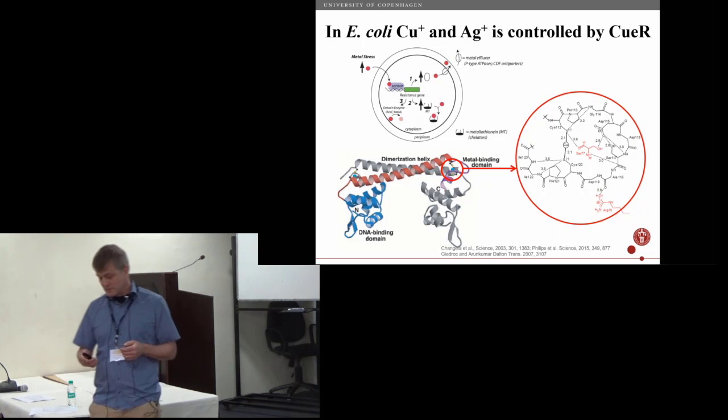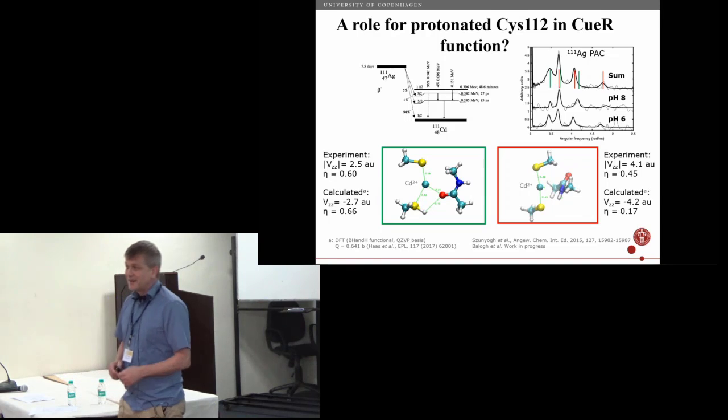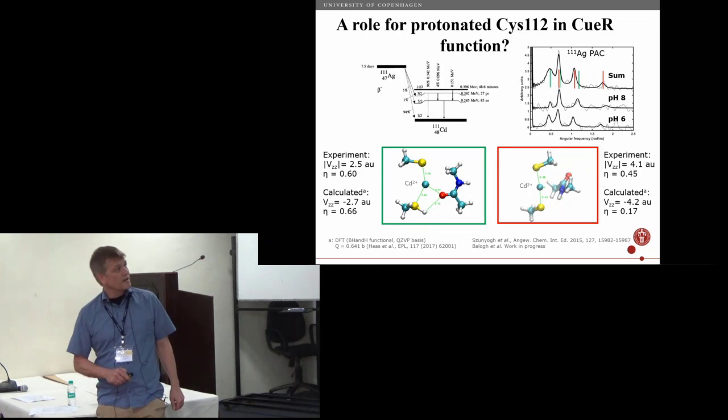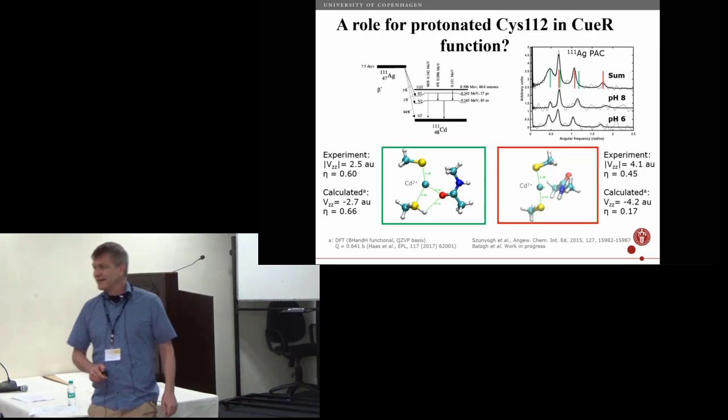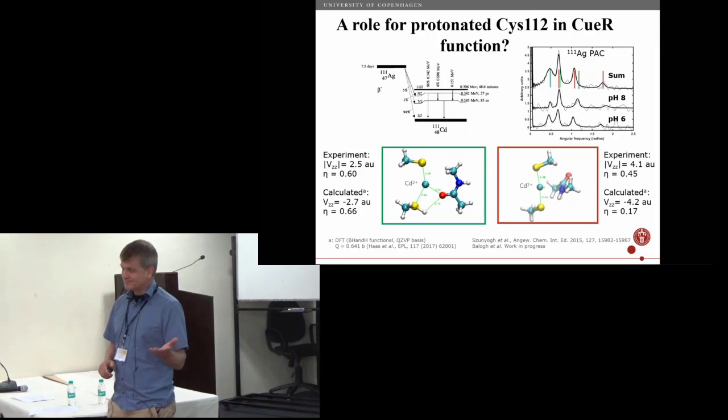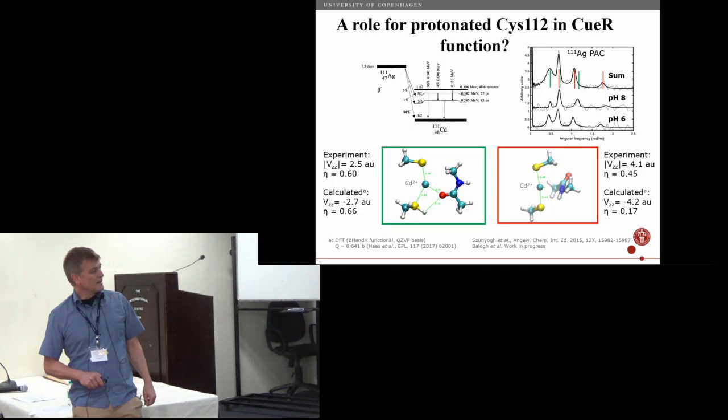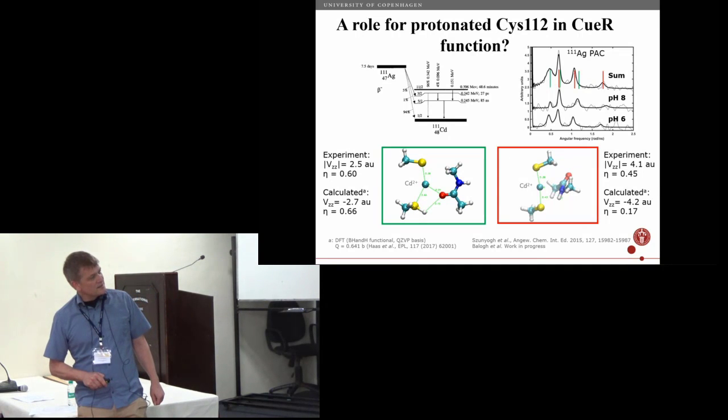First I would like to point your attention to the PAC data here on top. It says 'sum'—this means that this was not so easy. This is silver-111 PAC which is a little more tedious than cadmium PAC, but we were able to make a number of measurements, and this sum means we added all of them. This was just to be able to identify which NQIs were present—there's a red one here again and the green one at lower frequency. Then we did hybrid DFT calculations to interpret the data and use the quadrupole moment that Heinz published two years ago.